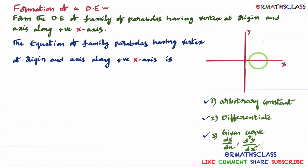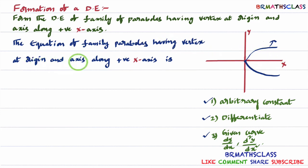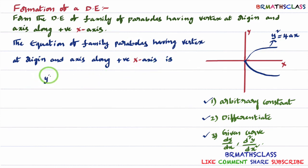Where is positive x-axis? This is positive x-axis, and vertex is at origin as usual. A parabola opened towards the right side — what is its equation? I considered only one parabola from the family. The general equation of all parabolas having vertex at origin and axis along positive x-axis is y² = 4ax. So the equation of the family is y² = 4ax.